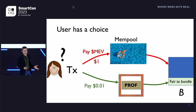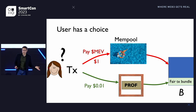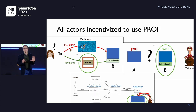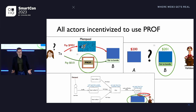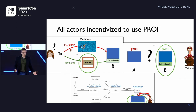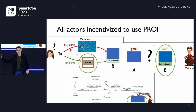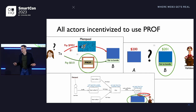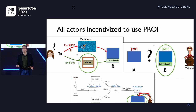Given the choice between these two options, an economically rational user is going to choose option B — it's better to pay a penny than a dollar. In summary, all of the actors in the ecosystem are incentivized to use PROF. The user will use PROF because it's less expensive. Validators will pick up PROF-enriched bundles because they offer a higher reward. And the MEV supply chain is essentially compelled to use PROF to be competitive. In the long term, the hope — or at any rate my hope — is that PROF is going to grow to the point where essentially all transactions are fairly ordered, according to your favorite notion of fairness, which may involve FSS.